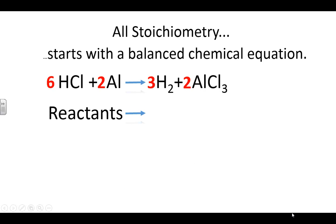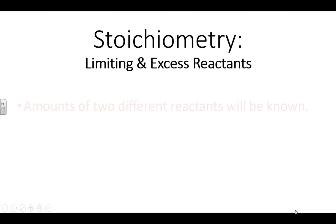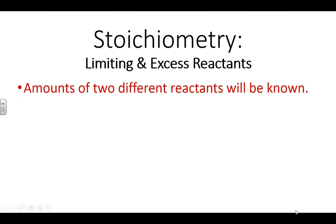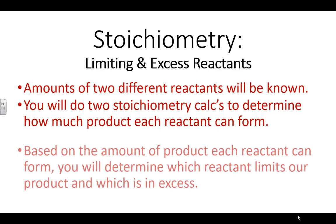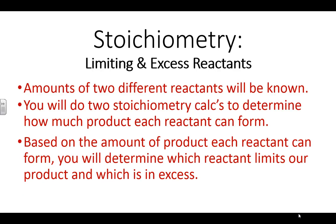The reactants are the things on the left, so the limiting reactant would be either hydrochloric acid or aluminum in this case. The products are the things on the right, and limiting reactants limit products. To recognize a limiting reactant problem, you'll know two different amounts of the reactants to start with. You're going to do stoichiometry to convert those reactants into the same product to figure out how much they can form, and then determine which reactant limits the product and which is in excess.